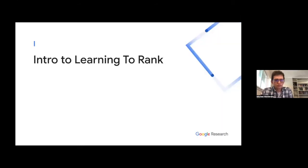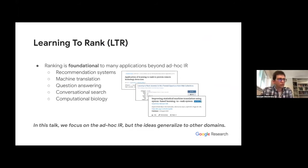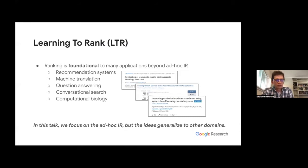First, a very brief introduction to learning to rank — the audience should know this, so I'll keep it brief. Learning to rank can apply to any ranking application, and those applications are fundamental to many machine learning problems: from recommendation systems to machine translation, question answering, conversational search, and even computational biology. I particularly focus on ad hoc information retrieval applications, but the ideas generally apply to other domains.